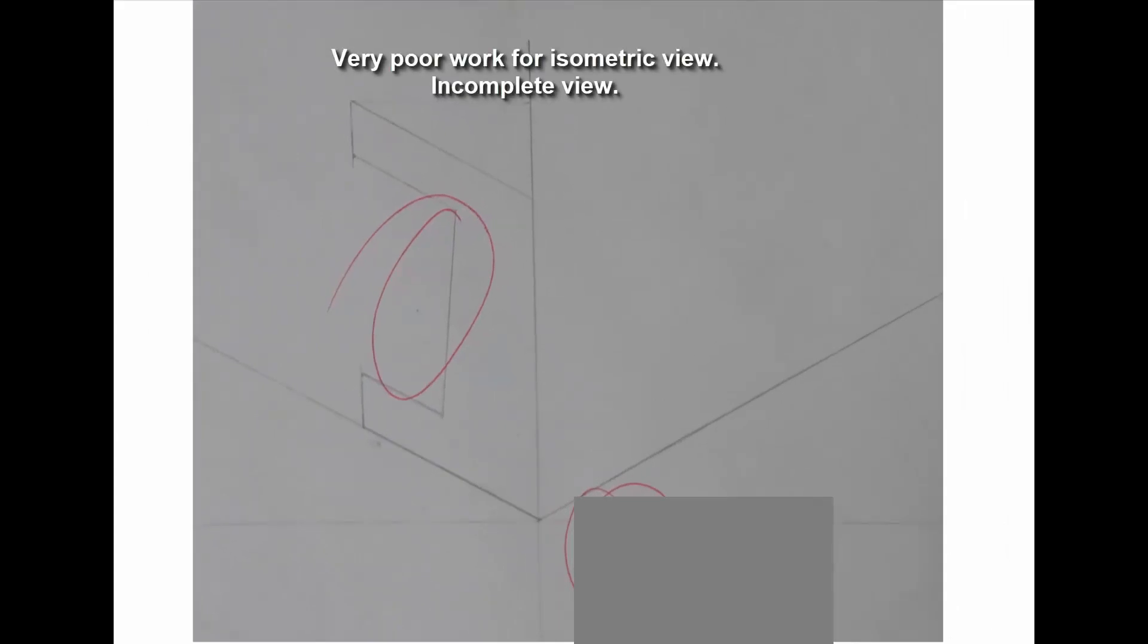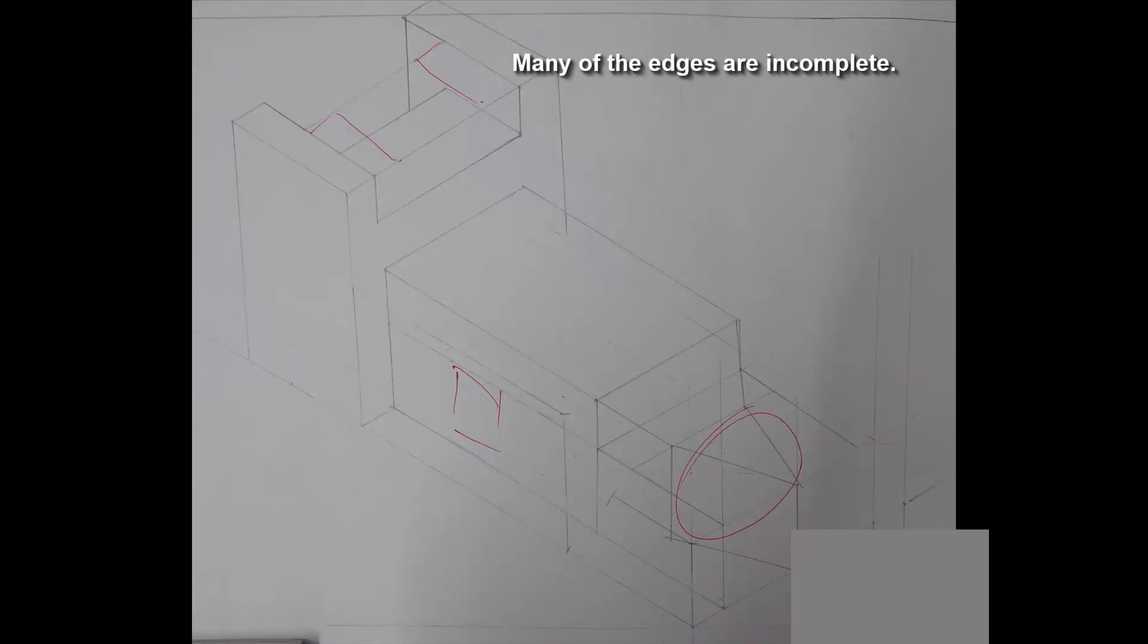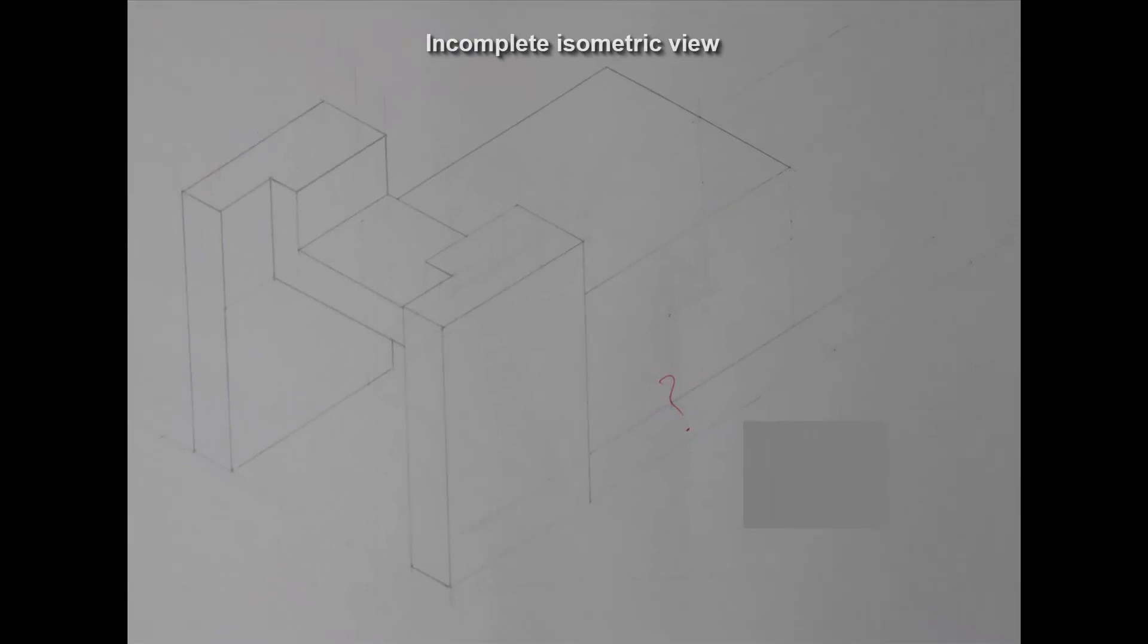This is a very poor work for isometric view. This is an incomplete work. No clarity for the outline of the machine parts here. You cannot understand what kind of machine part it is. Many of the edges are incomplete. This is also an incomplete isometric view of a machine part.